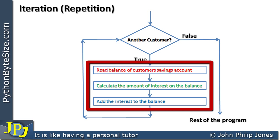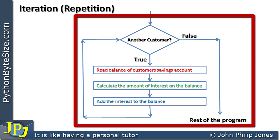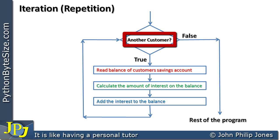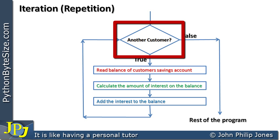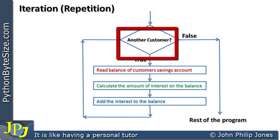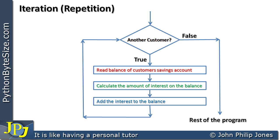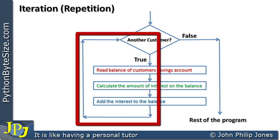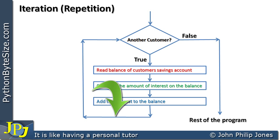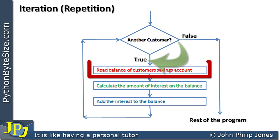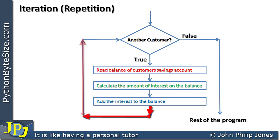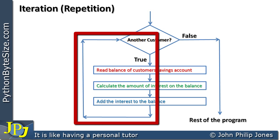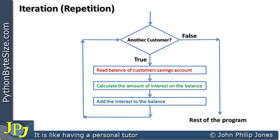Here the sequence is placed inside an appropriate flowchart. At the beginning there's a diamond shape asking 'another customer?' — this represents a question or test that returns true or false. When it's true, the flow executes every step of the sequence inside the loop, following the arrows back to the question again. We go around this loop every time there is another customer whose interest we need to calculate.